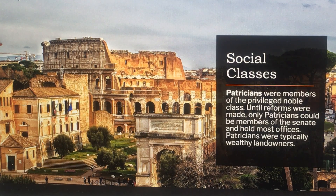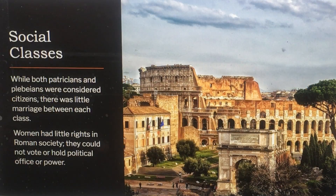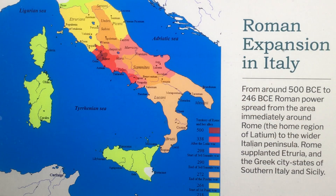Patricians were members of the privileged noble class. Until reforms were made, only patricians could be members of the Senate and hold most offices; they were typically wealthy landowners. The plebeians were members of the general Roman citizenry who often lived in apartments called insulae and made up the largest percentage of the Roman population. While both classes were considered citizens, there was little intermarriage, and women had little rights — they could not vote or hold political office.